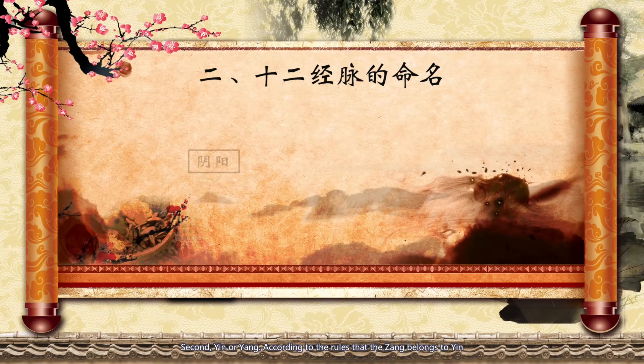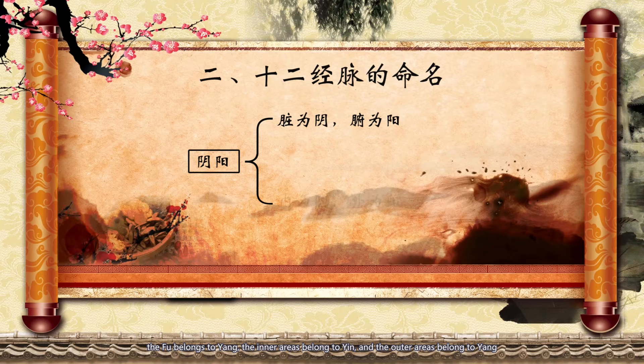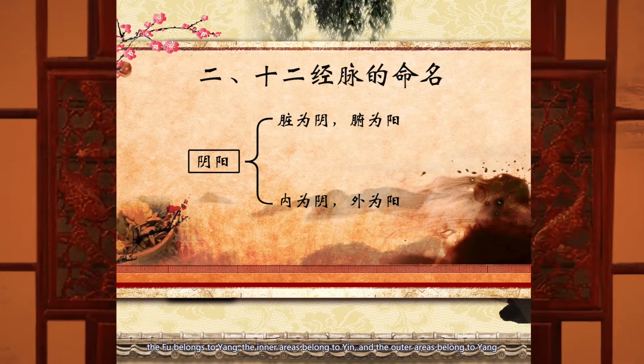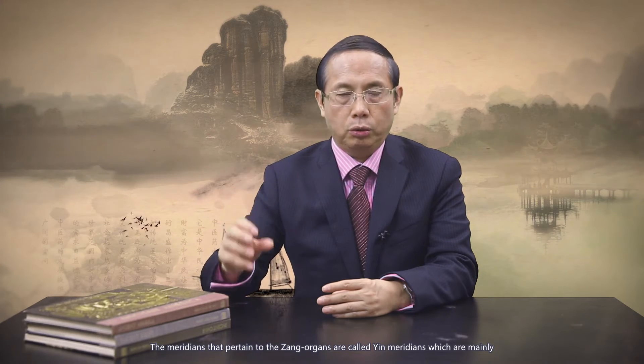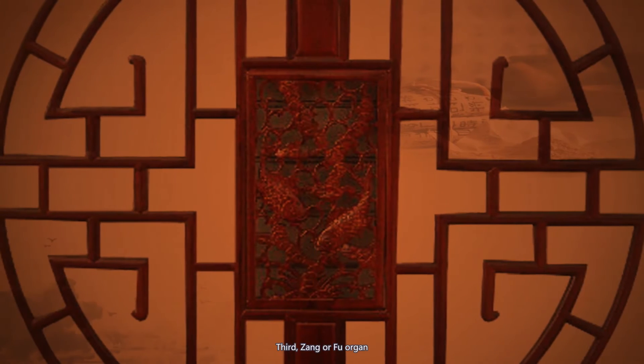Second, yin or yang. According to the rules that the zang belongs to yin, the fu belongs to yang, the inner areas belong to yin, and the outer areas belong to yang: the meridians that pertain to the zang organs are called yin meridians, which are mainly distributed on the medial aspect of the four limbs. The meridians that pertain to the fu organs are yang meridians, which mainly travel along the lateral aspect of the limbs. Correspondingly, we could estimate the yin and yang according to the characteristics and connections.